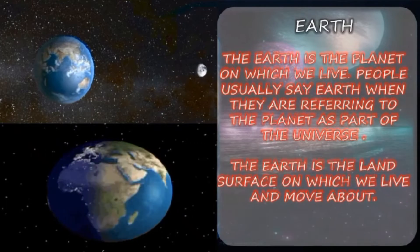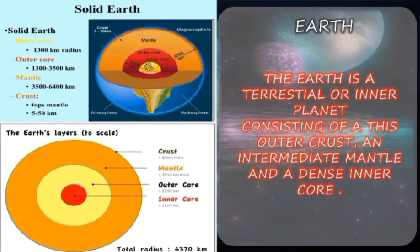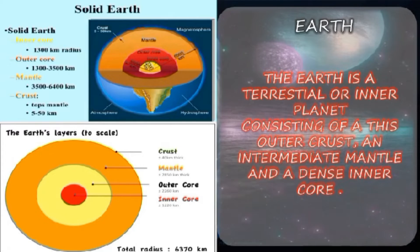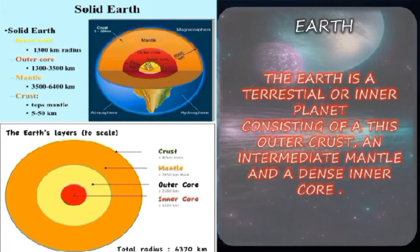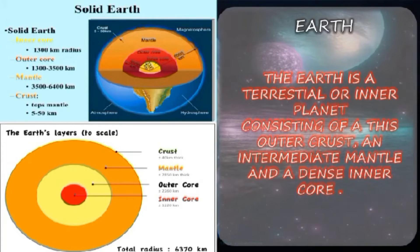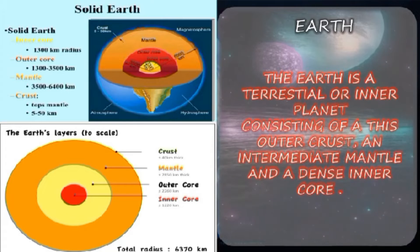Next, we are going to study about the layers of the Earth. The Earth is a terrestrial or inner planet consisting of an outer crust, an intermediate mantle, and a dense inner core. In the slide, you can see the solid Earth: the inner core with a 1,300 kilometer radius, the outer core from 1,300 to 3,500 kilometers, the mantle from 3,500 to 6,400 kilometers, and the crust at the top mantle, 5 to 50 kilometers. The crust is a silicate solid, the mantle is viscous rock, the outer core is a viscous liquid, and the inner core is a dense solid.